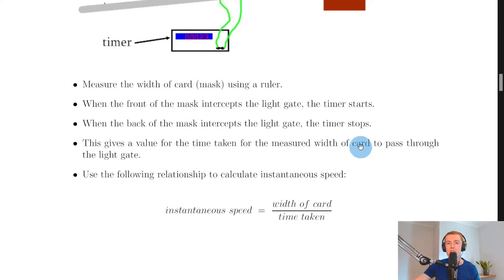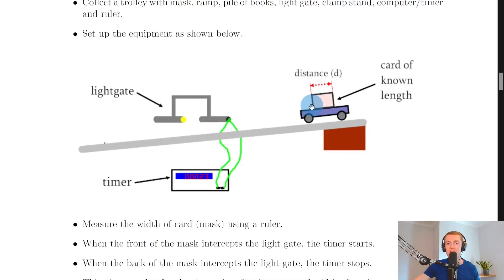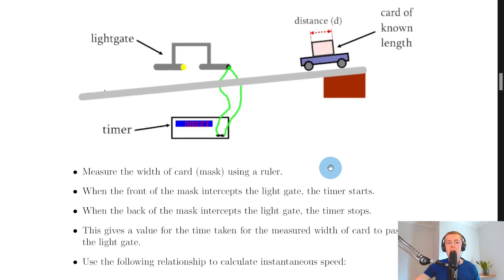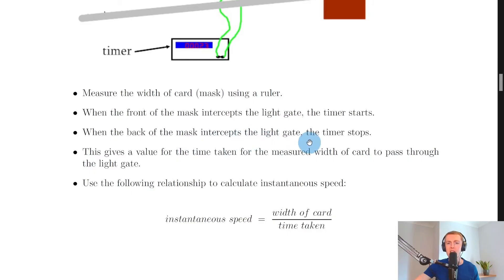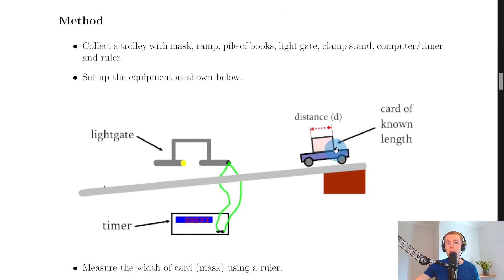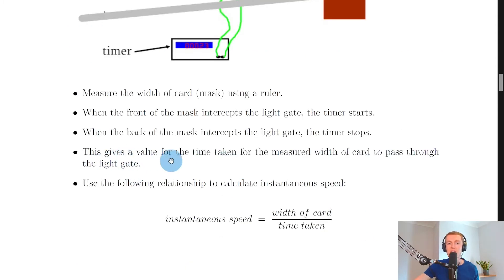When the front of the mask intercepts the light gate, the timer starts. So when the front of this mask intercepts the light gate here, cuts the beam, it's going to start the timer. And when the back of the mask intercepts the light gate, the timer stops. This gives a value for the time taken for the measured width of card to pass through the light gate.